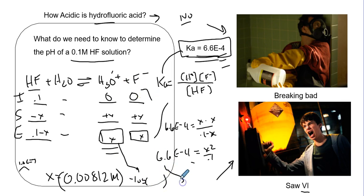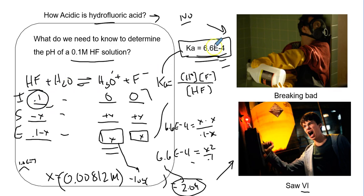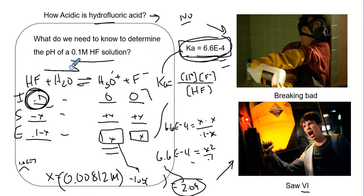Negative log of 0.0081 equals 2.09. So pH equals 2.09 - this is my acidic pH. To summarize: we need a concentration and a Ka value - those are really the only two things required to find the pH and H+ concentration of a weak acid. The concentration tells me how much I start with, and Ka tells me how much kicks over.